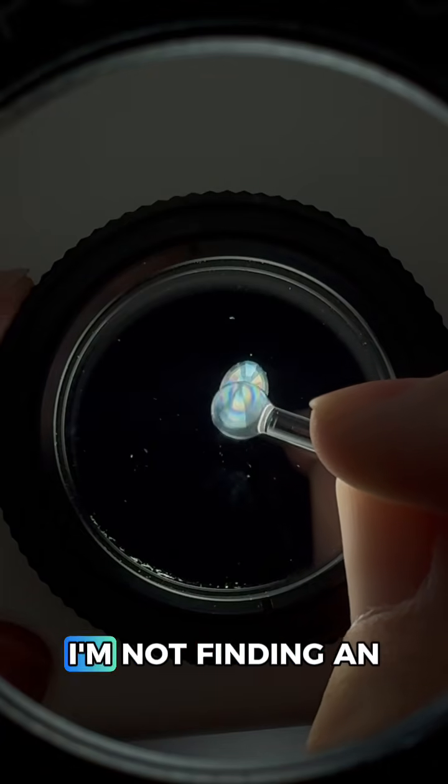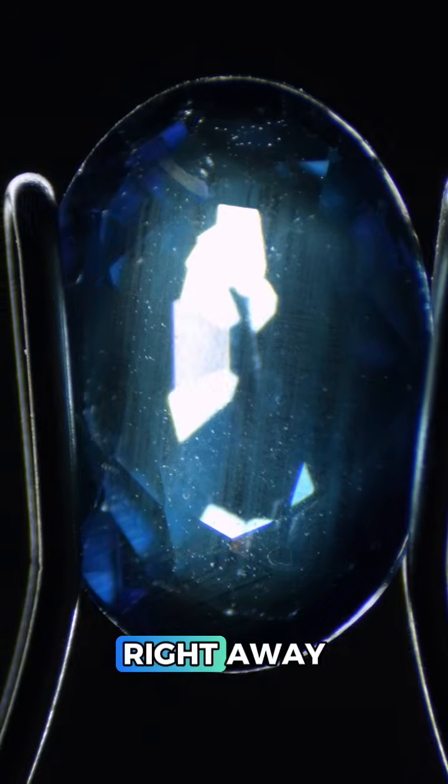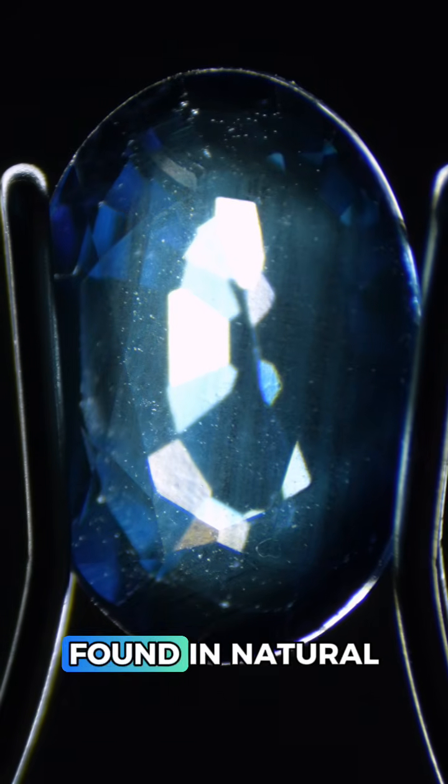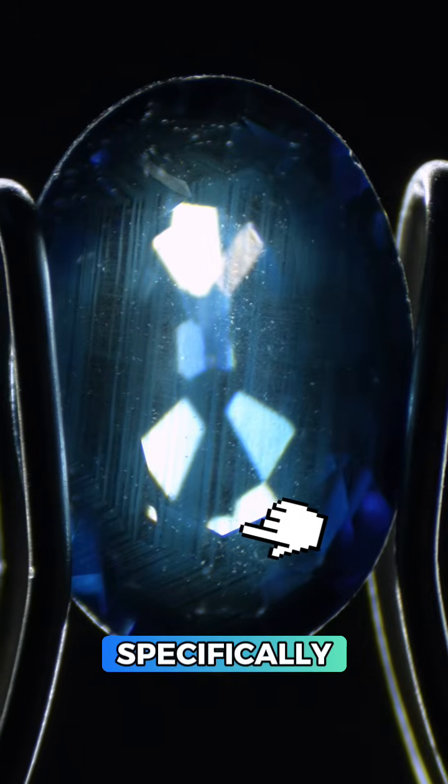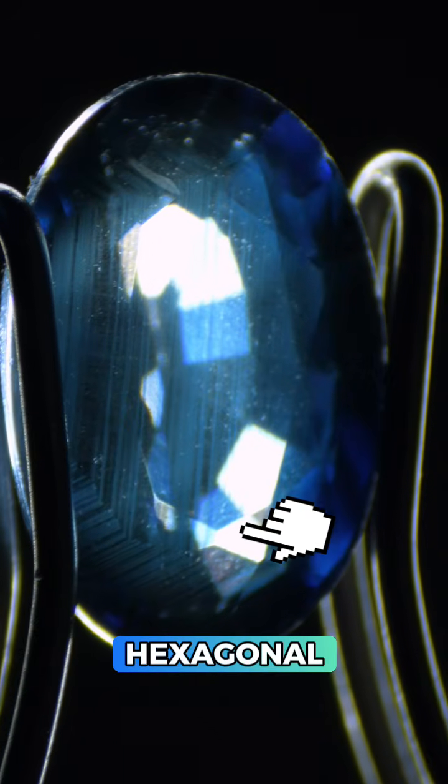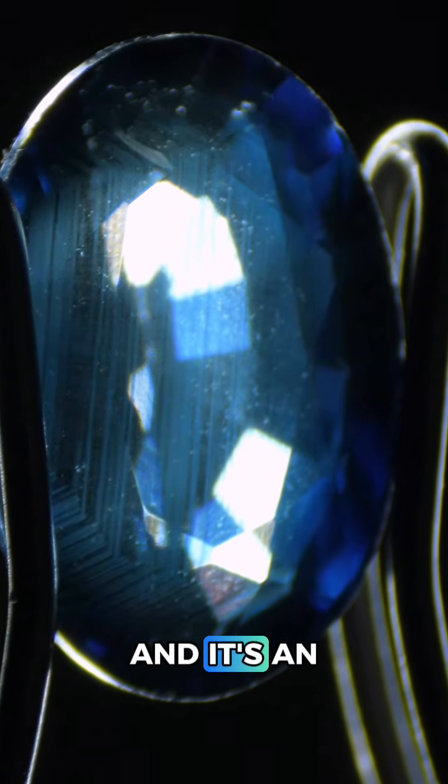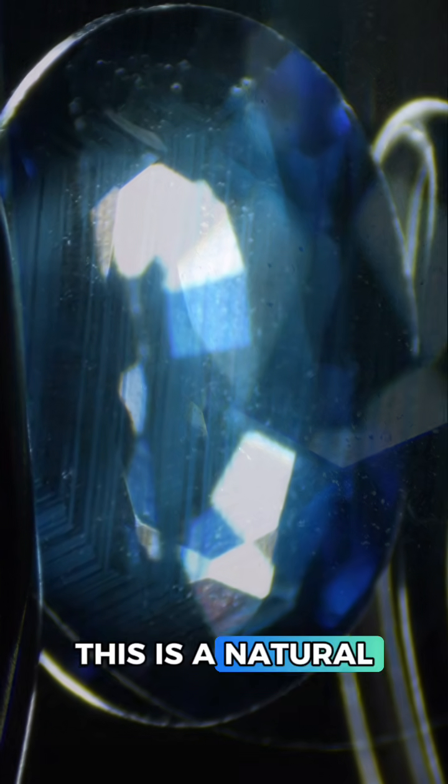Using the condensing sphere, I'm not finding an optic figure so let's head to the microscope. Right away you can see natural inclusions found in natural sapphire, specifically the unevenly spaced and hexagonal growth of the crystal. This is called growth banding and it's an excellent indication this is a natural sapphire.